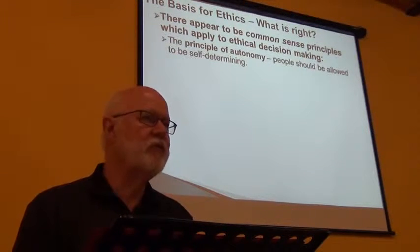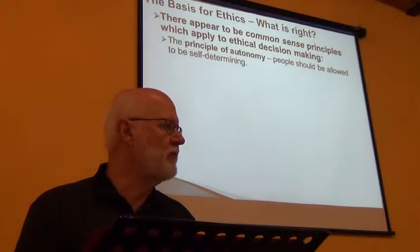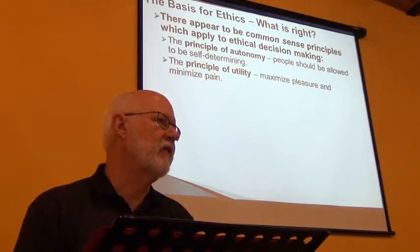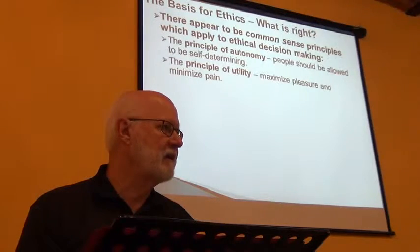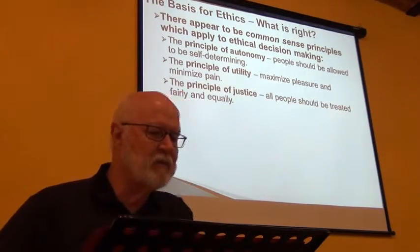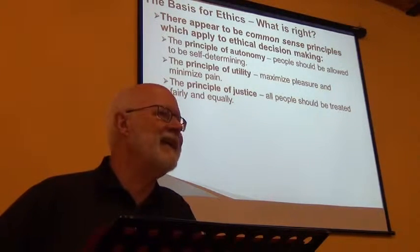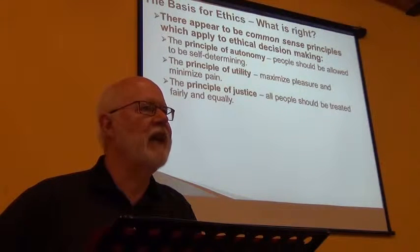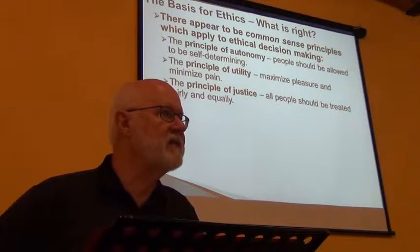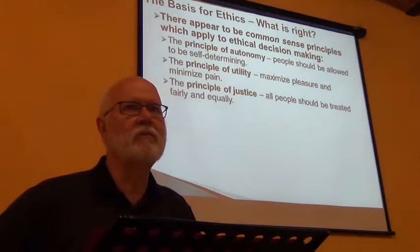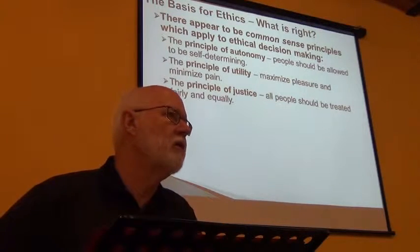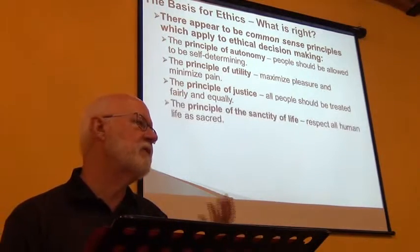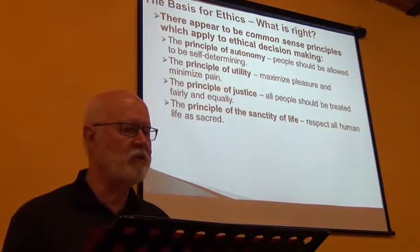The principle of autonomy: people should be allowed to be self-determining — I should be able to decide what's right for me. The principle of utility: how do I maximize pleasure and minimize pain? The principle of justice: all people should be treated fairly and equally. As one utilitarian said about government, 'Everyone should count as one and no more than one' — meaning everybody's equal. One person doesn't get to vote ten times while another gets no vote. And then the principle of sanctity of life: there is a respect for all human life as sacred.